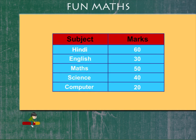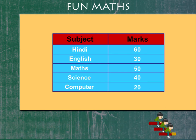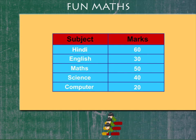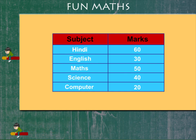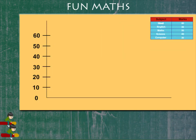Fun Maths. Here are the marks received by Anubhav in the test: Hindi 60, English 30, Maths 50, Science 40, Computer 20. To make a visual comparison, let's make a bar graph for Anubhav's result.